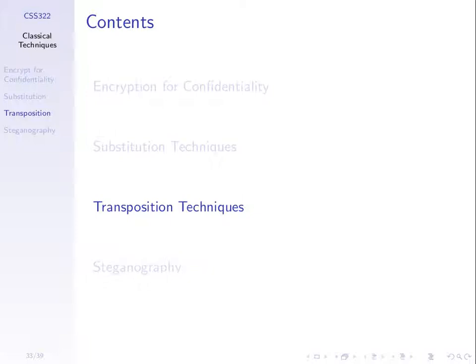We finished last week with a few quick examples on transposition techniques. These classical ciphers are being used to demonstrate concepts that are used in real ciphers. With substitution techniques, we went through from a very basic Caesar cipher building up to the one-time pad. The one-time pad is the best — it's perfect for security, you can't break it.